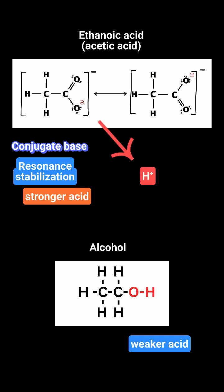Ethanoic acid has a pKa around 4.76, indicating it is a weak acid, but still considerably stronger than typical alcohols. Alcohols like ethanol have pKa values around 16, making them much weaker acids compared to ethanoic acid.